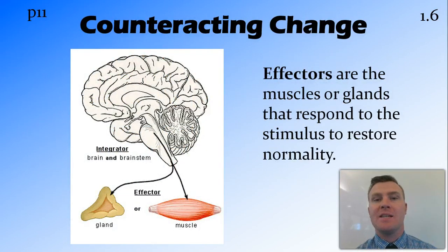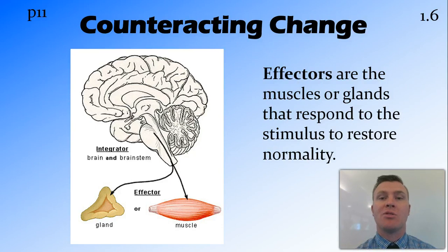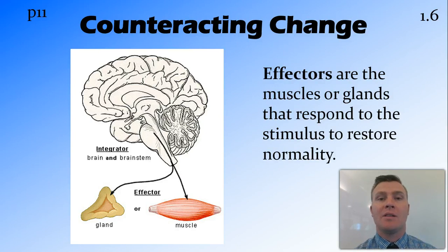Once we've detected the change, we then need to counteract it. The things that counteract the change in our bodies are referred to as effectors. That could be muscles which move to produce a particular response, or a gland that secretes some sort of hormone to elicit a response, which counteracts the stimuli and brings it back to normality or the status quo.